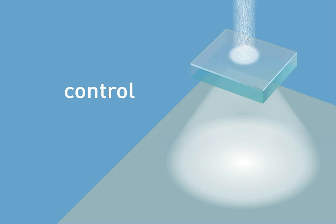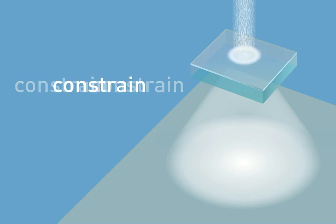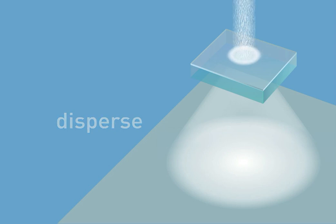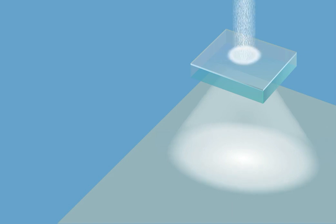MesoOptics provides exceptional lighting control. It can constrain or disperse lighting for optimum control and uniformity. It also allows for the creation of precise beam patterns, such as circular, oval, or linear shapes.